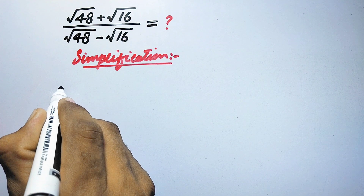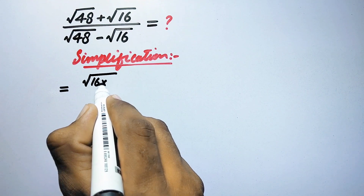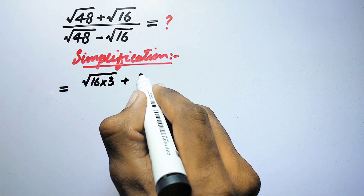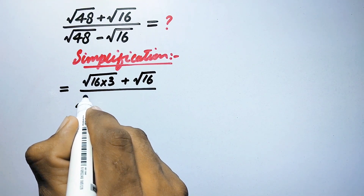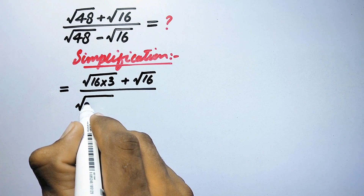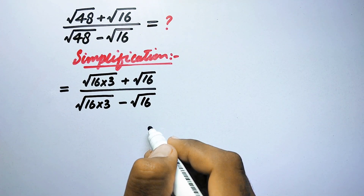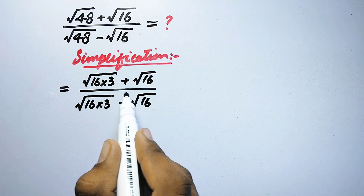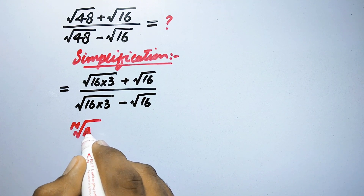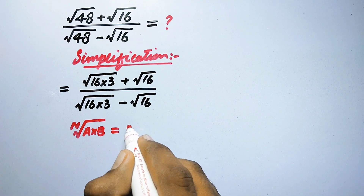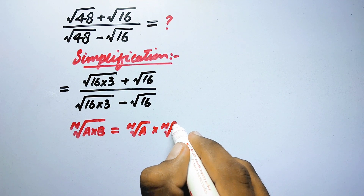In the first step, square root of 48 can be written as square root of 16 times 3, plus square root of 16, divided by square root of 48 — which is the same as 16 times 3 — minus square root of 16. We can follow an identity of radicals: n-th root of a times b can be written as n-th root of a times n-th root of b.